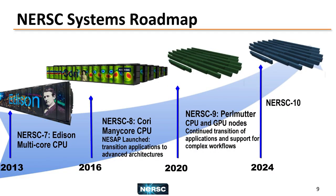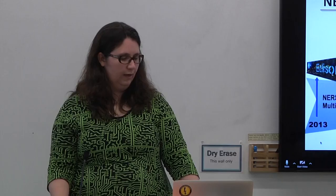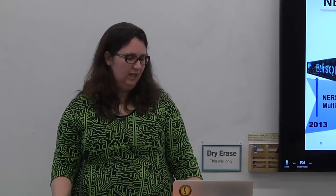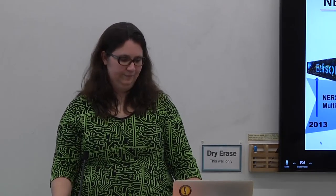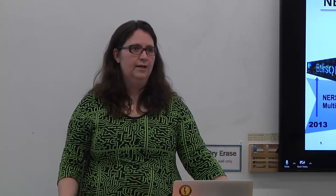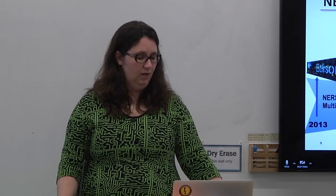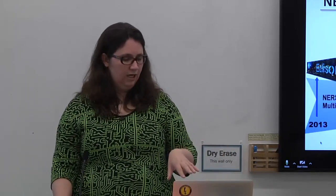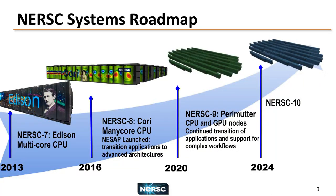Let's talk about our systems. In 2013 we got Edison, which was recently retired. In 2016 we got Cori. At the end of 2020 we're going to get Perlmutter, which will be available to users in 2021. And then hopefully in 2024 we'll get NERSC10. We name our machines after great scientists — Cori is named after Gertie Cori, the first American woman to earn a Nobel Prize in science, who discovered the Cori cycle.